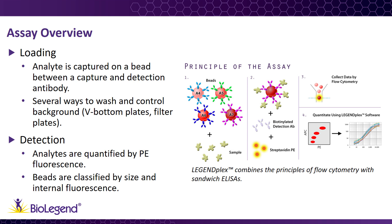Let's review the basic principles of how LegendPlex works. LegendPlex utilizes the same basic principles of sandwich immunoassays, whereby a soluble analyte is captured onto a bead between two antibodies. The biotinylated detection antibody is then labeled with a streptavidin PE molecule to allow for quantification. Individual beads are distinguished by size and varying levels of internal APC, or suitable fluorescence detection channel. The labeled beads are then acquired on a conventional flow cytometer.